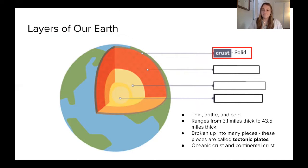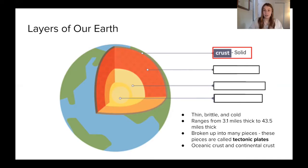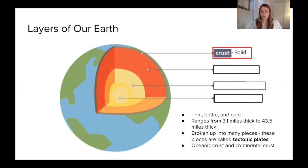Geologists use the terms crust and tectonic plates pretty interchangeably, even though they have some slight differences. For the most part, they mean the same thing. There's rock at the bottom of the ocean — crust underneath the ocean — and we call that oceanic crust. While the continents that we get to walk on are called continental crust. We're going to investigate those terms and what they mean when two plates interact with each other.